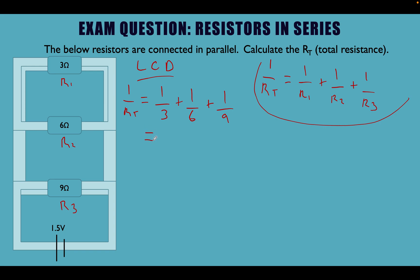So writing this out again: 1 over Rt is equal to — with 18 as our denominator — 9 goes into 18 twice, so we write 2; 6 goes into 18 three times, so we write 3; and 3 goes into 18 six times, so we write 6. So 1 over Rt is equal to 6 plus 3 plus 2, all divided by 18.